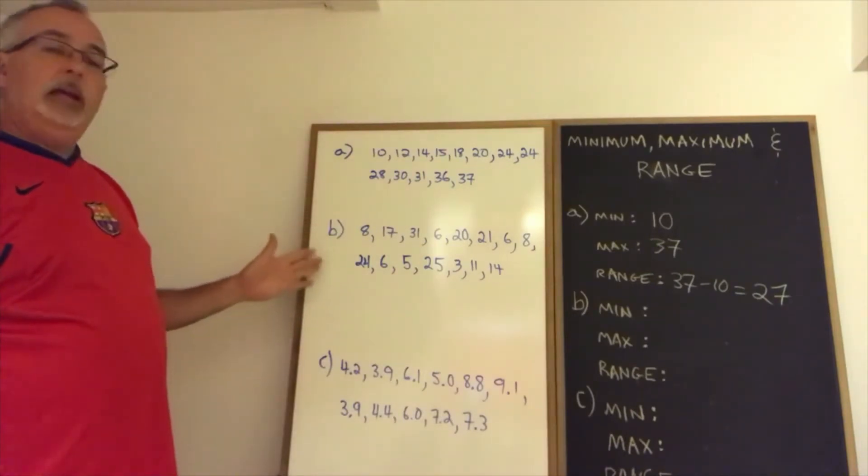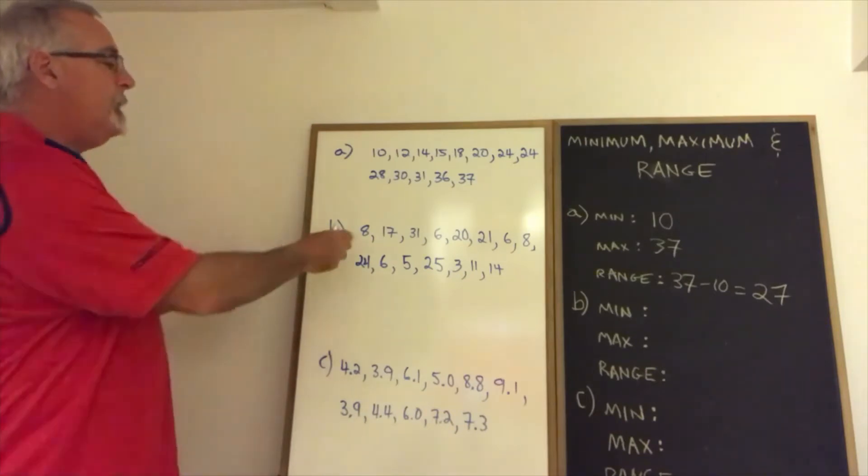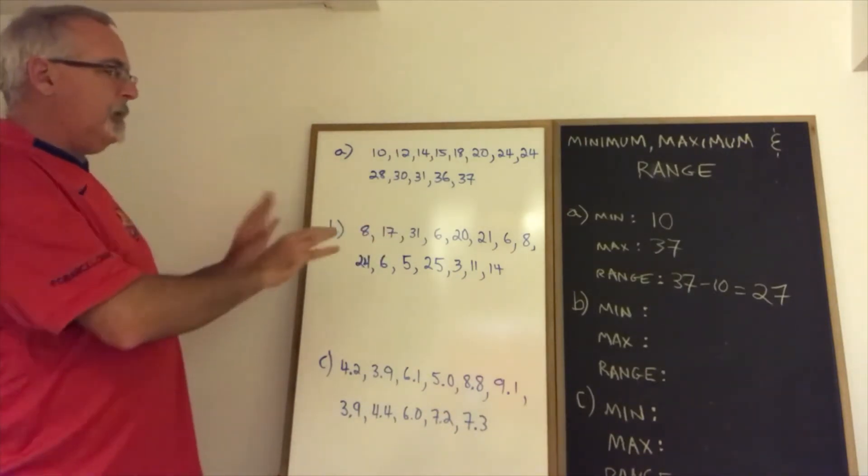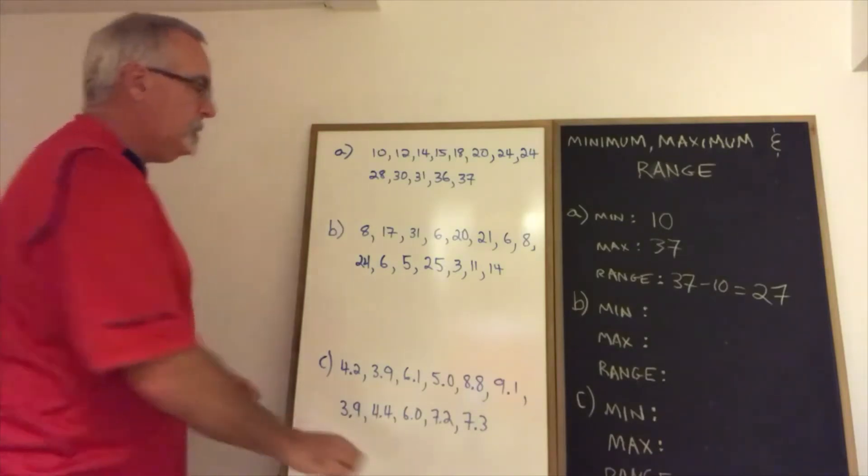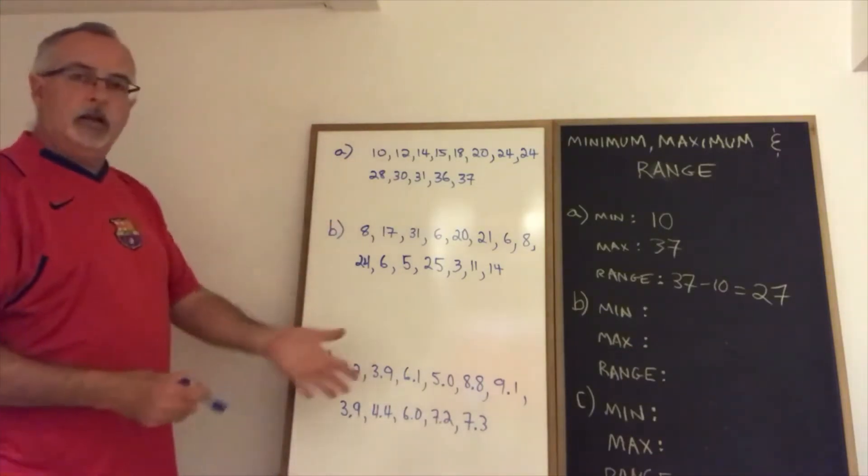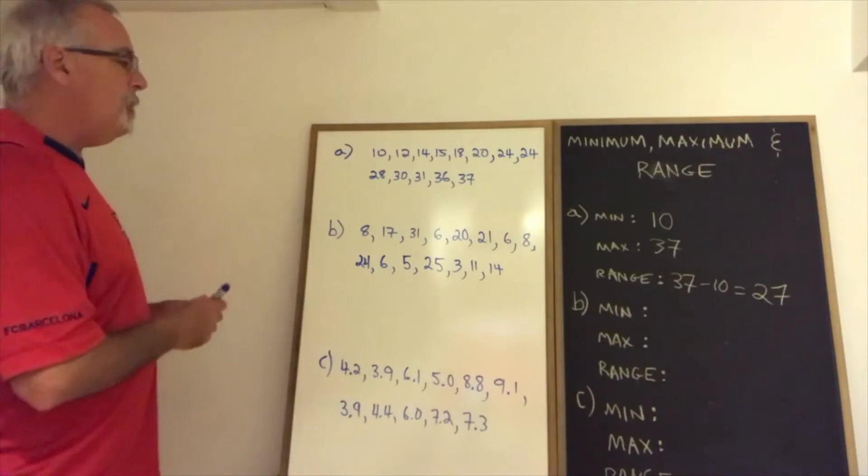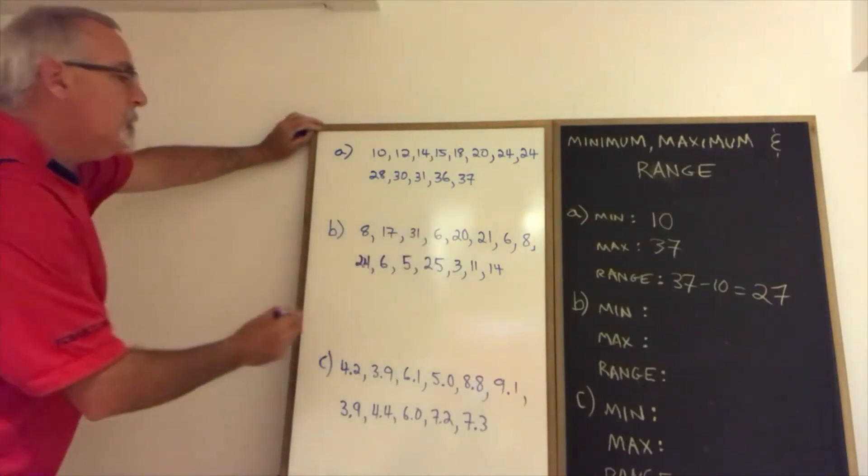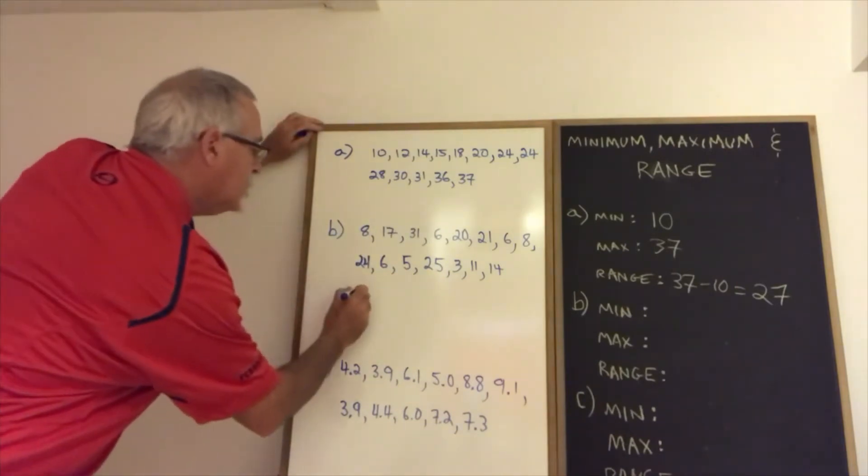In B, we have not had the favor done for us of having the numbers arranged from smallest to largest. So we have to be a little bit more careful because we could choose the wrong number and get a wrong answer on what was an easy question. That would be sad. So I think the best thing to do is to rewrite the data so that it does go from smallest to largest.